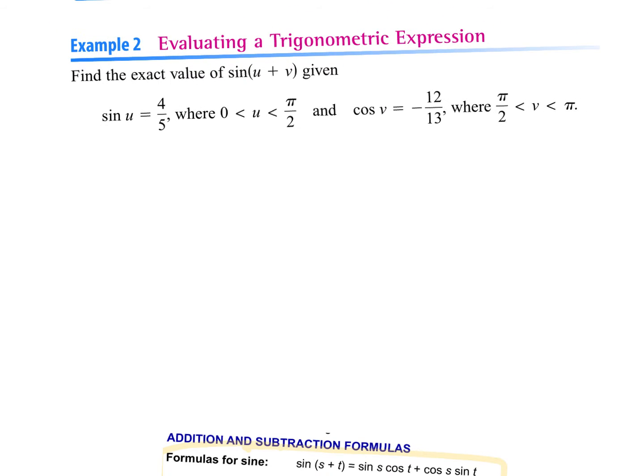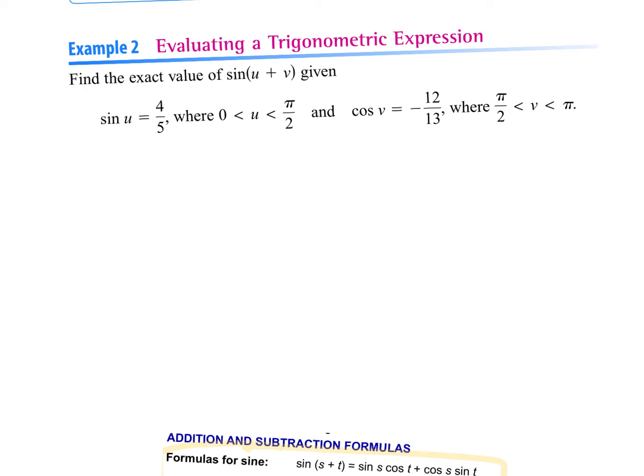So this problem, this is part two. They did not say find the cosine of something. In this question, if you look at it, what formula do they want me to use? Sine of U plus V. So they gave me information about triangle U and they gave me information about triangle V.